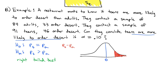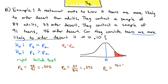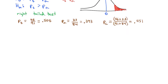Let's calculate the pieces we need. The proportion of teens who order dessert is 46 out of 91, which is 0.505. The proportion of adults who order dessert is 33 out of 84, which is 0.393. For the pooled proportion — treating everyone as one group — the number of successes is 46 plus 33 over 91 plus 84. Using parentheses for correct order of operations, the pooled proportion is 0.451.